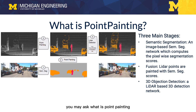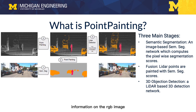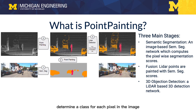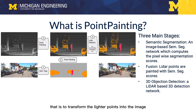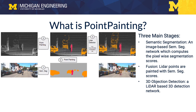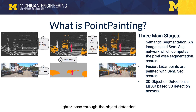You may ask: what is Point Painting? In short, Point Painting means you paint a LiDAR point cloud with the semantic information from an RGB image. There are three main stages. The first is semantic segmentation — determining the class for each pixel in the image. The second is fusion — transforming the LiDAR points into the image and finding class scores for each point in the point cloud frame. The third is 3D object detection — using the painted point cloud to do LiDAR-based 3D object detection.